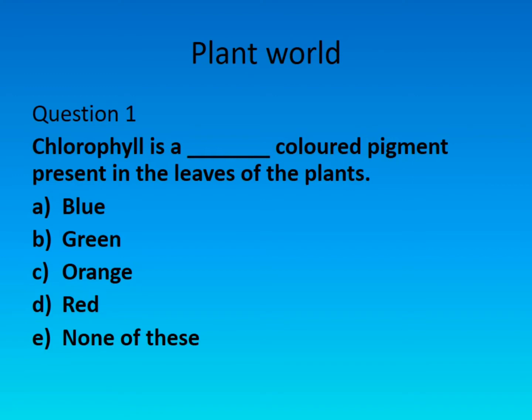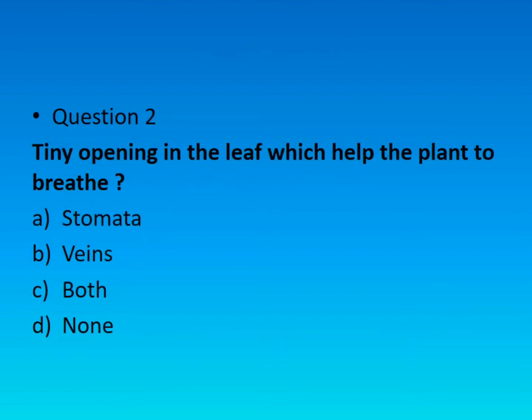The right answer is option B: green. Question number two: tiny opening in the leaf which help the plant to breathe. The right answer is option A: stomata.